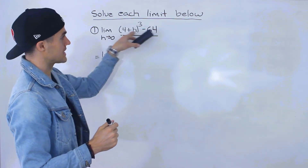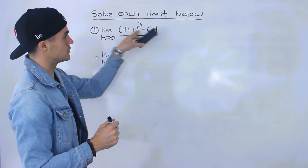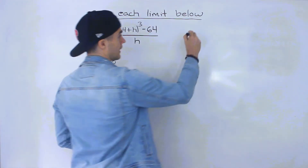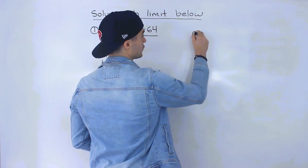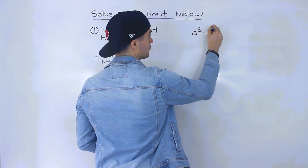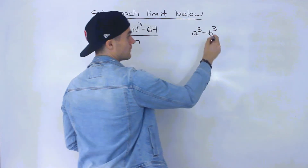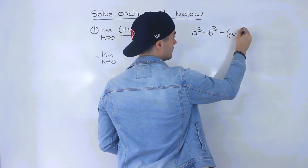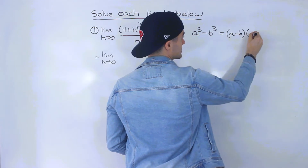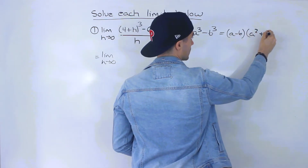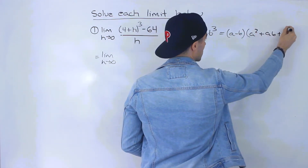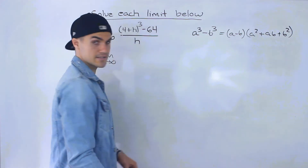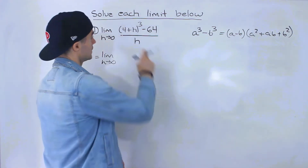Notice that the numerator is a difference of cubes. A difference of cubes in general: if you have a cubed minus b cubed, that's equal to (a minus b) times (a squared plus ab plus b squared). That's the formula for a difference of cubes.